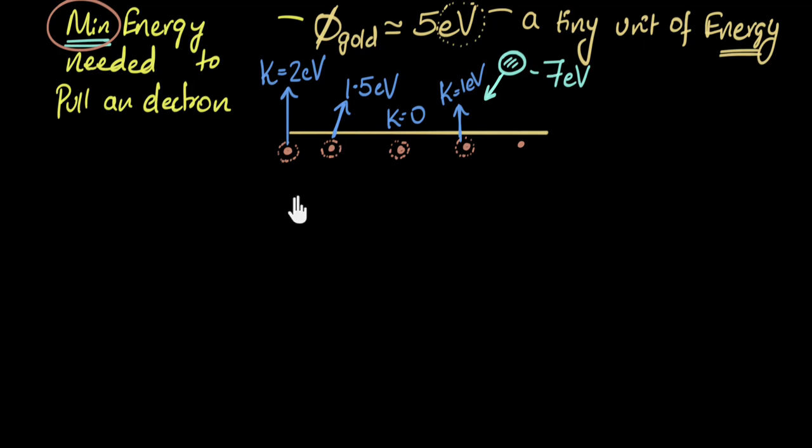Do you think any electron, in this situation, for gold, when you shine seven electron volts of light, do you think any electron can come with more energy than two electron volts? Can someone have more than two? I want you to pause and think a little bit about it. No, it's not possible because I know for sure that any electron I take, you have to at least spend five from this to escape. You can spend more, but you at least need to spend five.